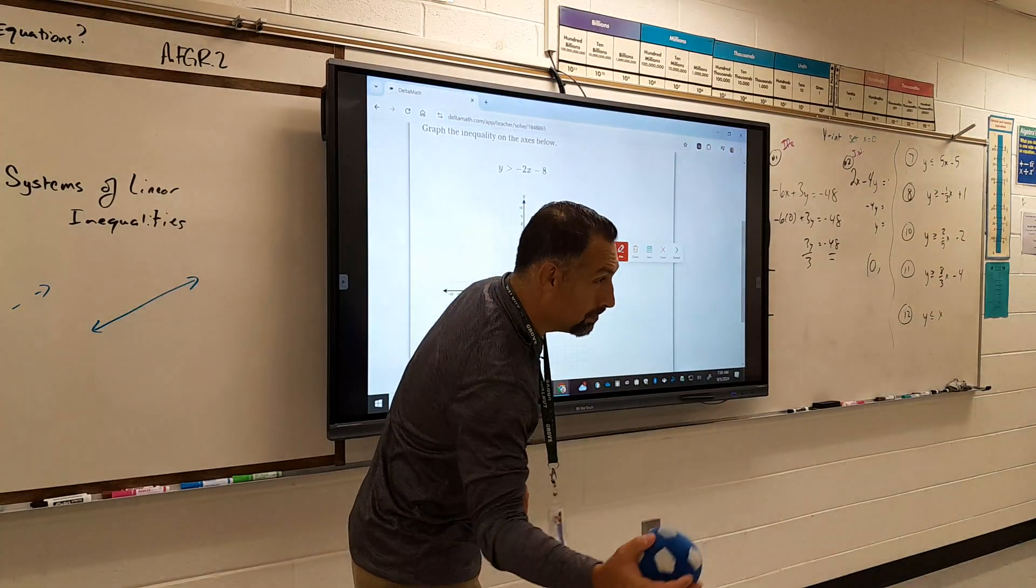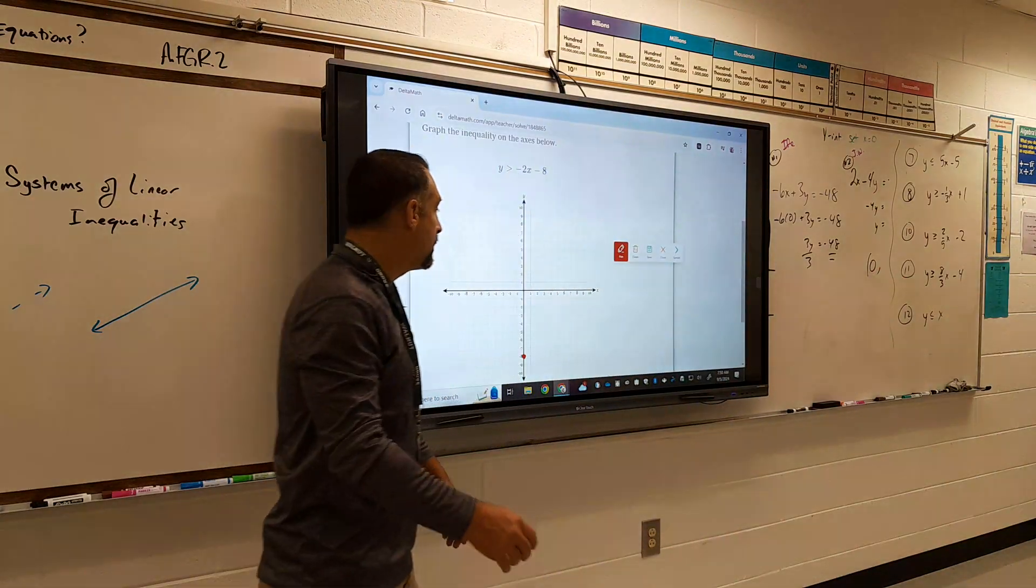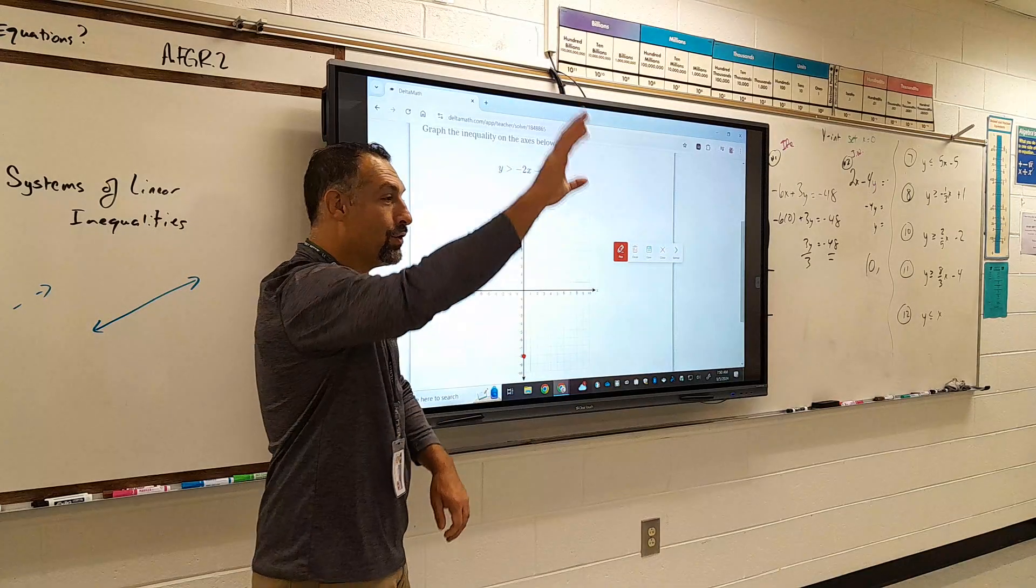What is the slope? Negative 2. Come on, you're getting a flush ball. There you go. What is the slope? Negative 2. Fabulous.